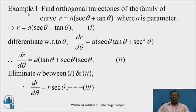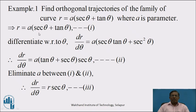Let us see illustration example 1. Find the orthogonal trajectories of the family of polar curve r = a(sec θ + tan θ), where a is a parameter. Solution: Let us denote the given curve r = a(sec θ + tan θ) by equation 1. By the first step, differentiate the given curve with respect to theta. We get dr/dθ = a[sec θ · tan θ + sec² θ]. Therefore, dr/dθ = a · sec θ(tan θ + sec θ). Denote this equation by 2.